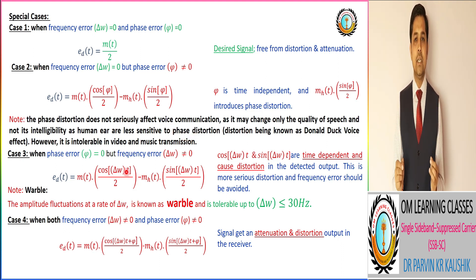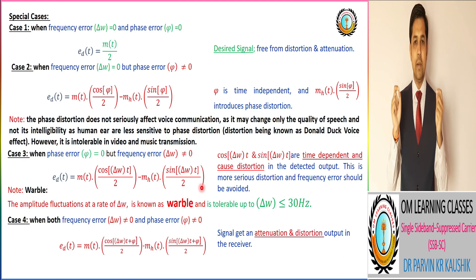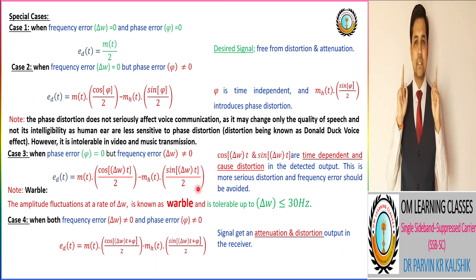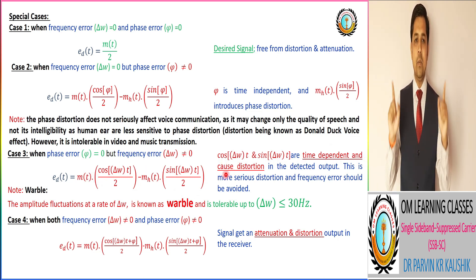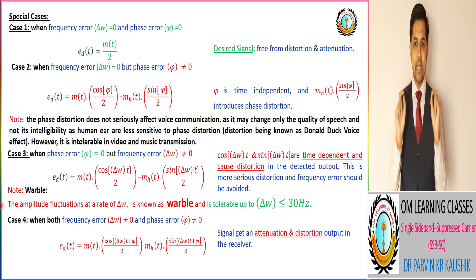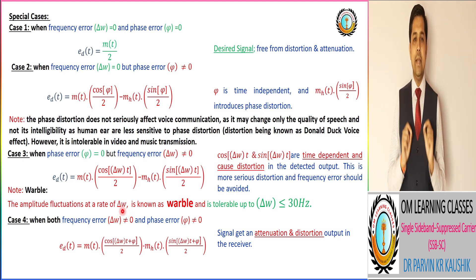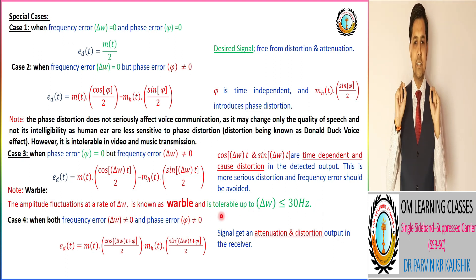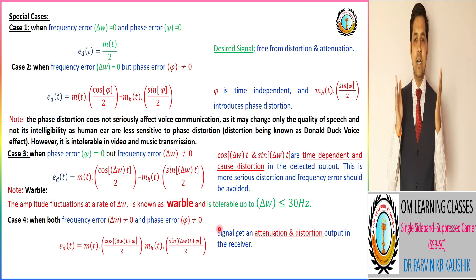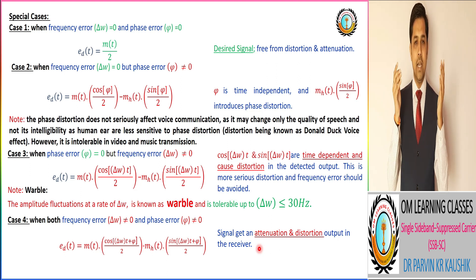In Case 3, the phase error is zero but frequency error is present. The EDT output equals m(t)/2 · cos(Δω·t) minus m̂(t)/2 · sin(Δω·t). The cos(Δω·t) and sin(Δω·t) terms are time-dependent and produce distortion in the detected output, which is similar to DSB-SC modulation technique. This produces a warble effect — amplitude fluctuation at a rate of Δω — and is tolerable up to a frequency error of about 30 Hz. If both frequency error and phase error are present, the signal experiences both attenuation and distortion in the detected output at the receiver.